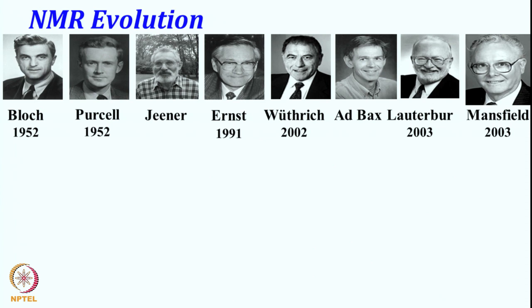Richard Ernst is credited for Fourier transform NMR and he got the Nobel Prize in 1991. It was Professor Kurt Wüthrich who brought NMR from chemistry to biology and demonstrated its application in structural biology; therefore he was awarded the Nobel Prize in 2002. In medicine, it was Paul Lauterbur and Peter Mansfield who brought NMR into MRI — Magnetic Resonance Imaging — and they also got the Nobel Prize in 2002.